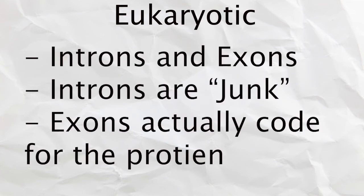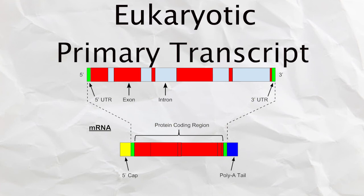Exons are actual sequences that code for the protein, and introns are basically junk in between those genes. When RNA polymerase is done transcribing, the primary transcript is made that still contains the introns.